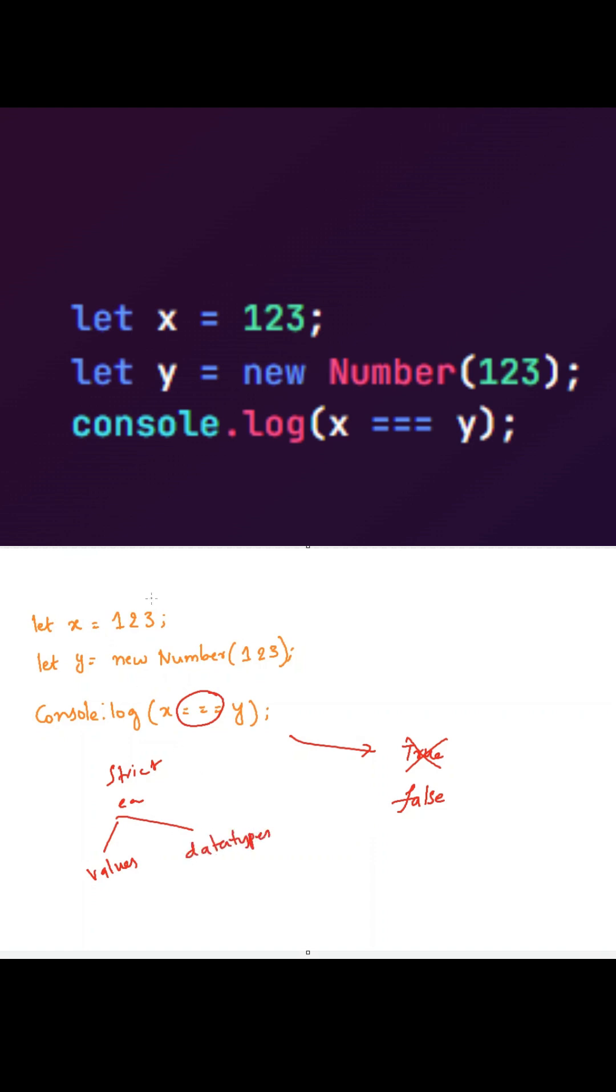If you see here, the value of x is 123, but the data type is number.